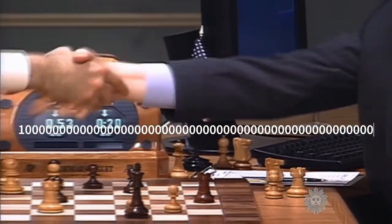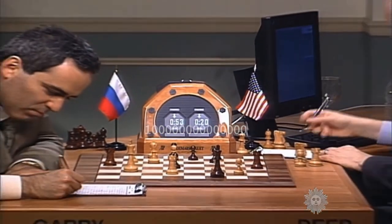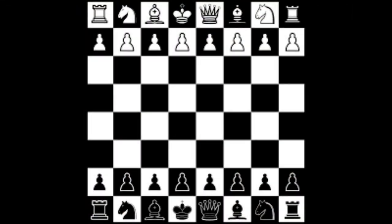This means that there are even more possible variations of chess games than there are atoms in the observable universe. So in the case of IBM's Deep Blue, it was able to calculate within 100 to 200 million possible moves to pick the best.